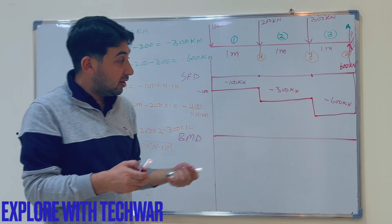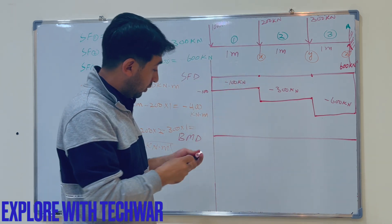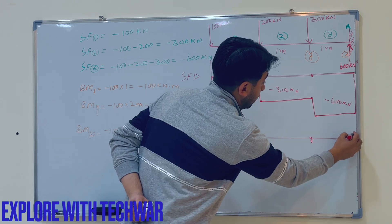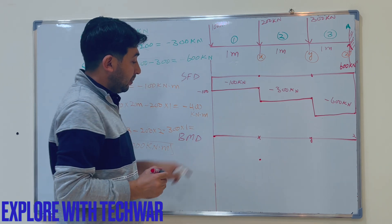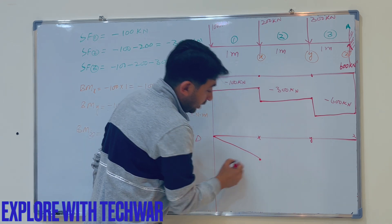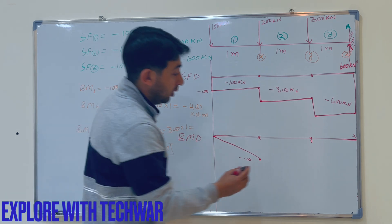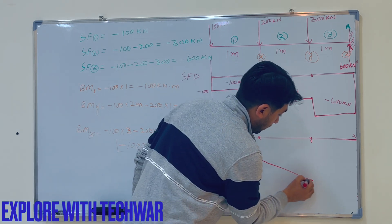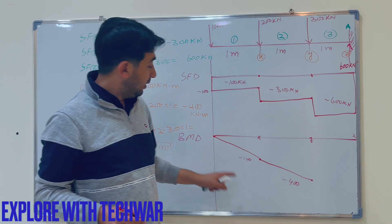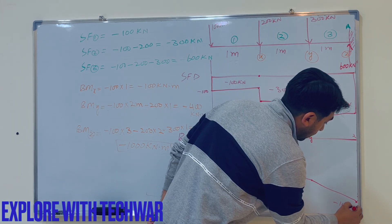Drawing the bending moment diagram: at the tip of the beam, the bending moment is zero. It goes to minus 100 at point x, then straight to minus 400 at point y, and finally reaches minus 1000 kilonewton-meters at point z near the fixed support.